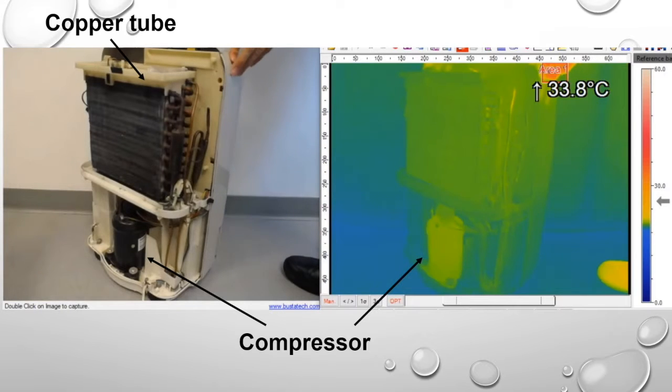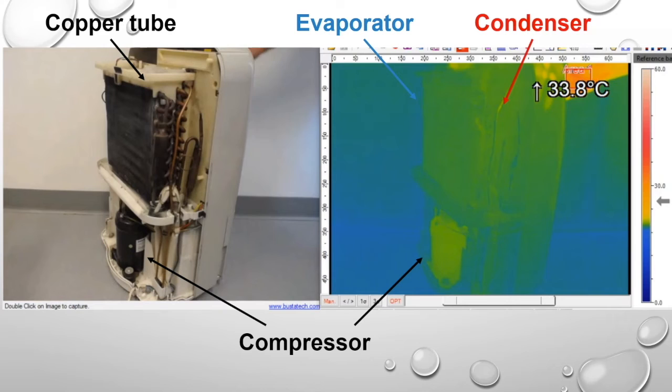The outside part is called the evaporator and the inside part is called the condenser, and it is filled with a chemical substance with a low boiling point called a refrigerant.